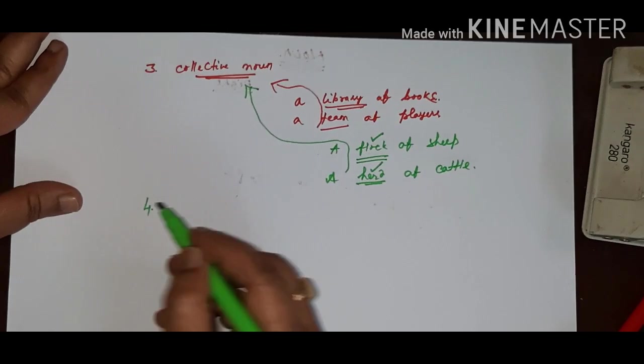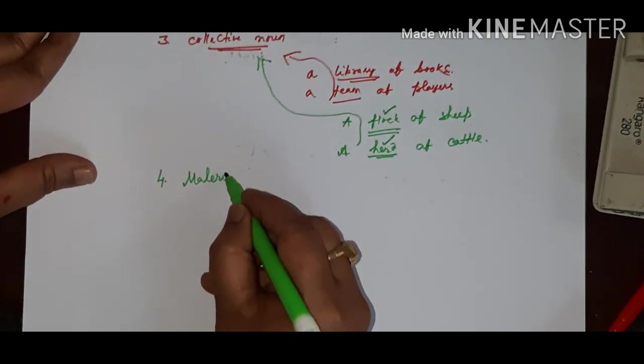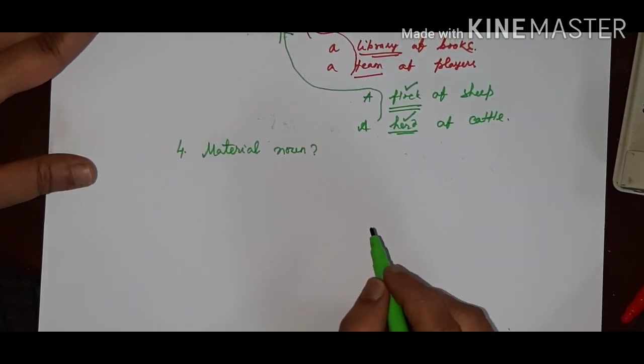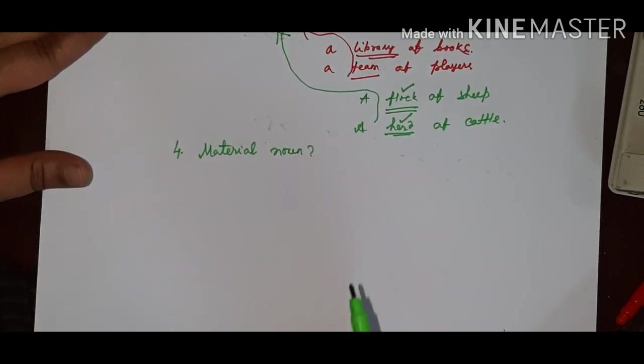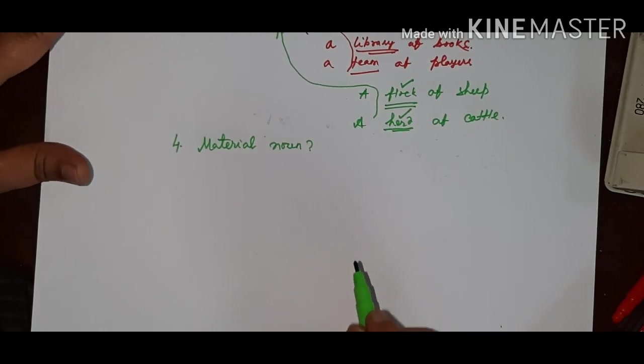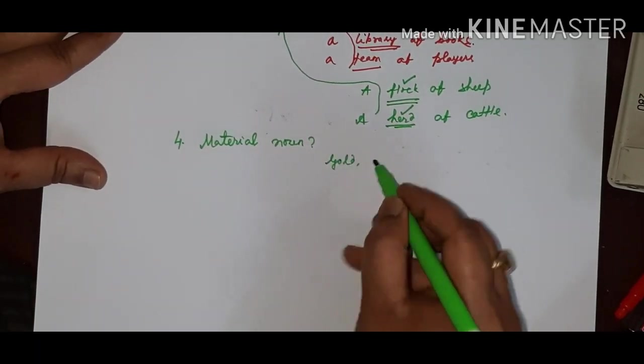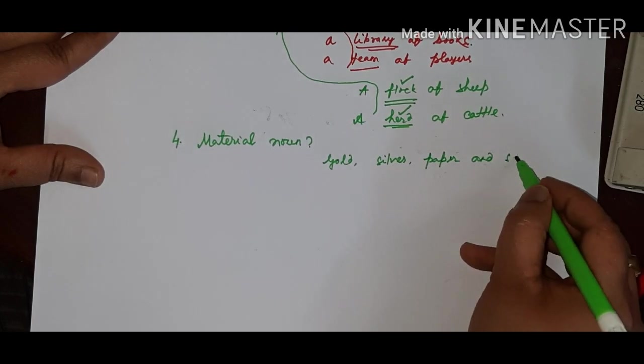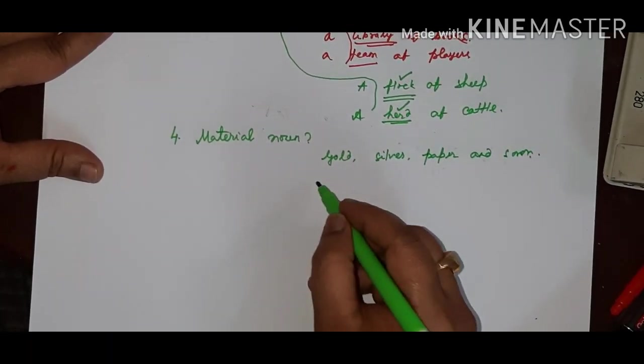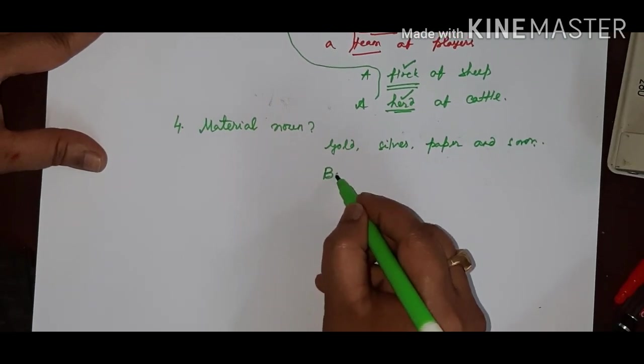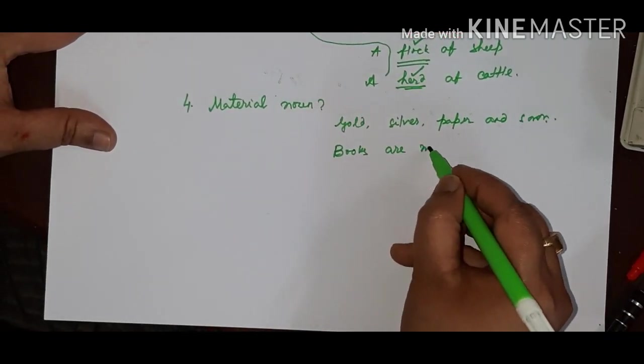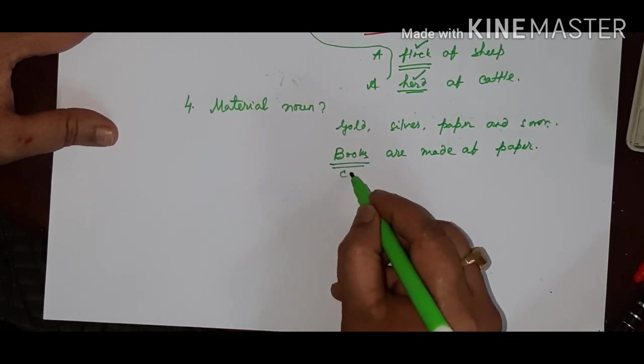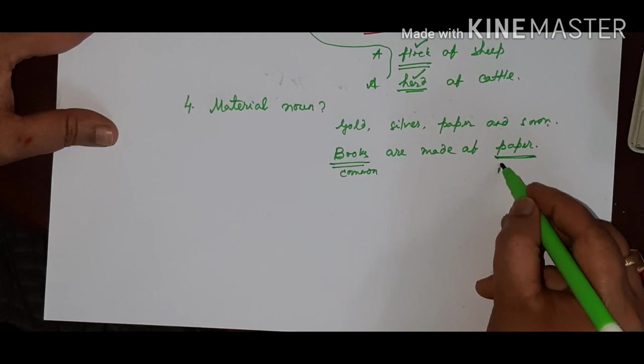Next is our material noun. What is a material noun? A material noun refers to a resource or substance or material from which things are made. Such as gold, silver, paper, and so on. See children, books are made of paper. Here, books is known as the common noun. And paper is known as the material noun.